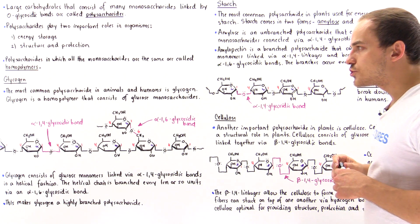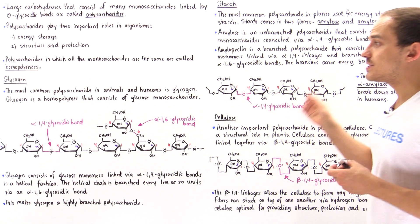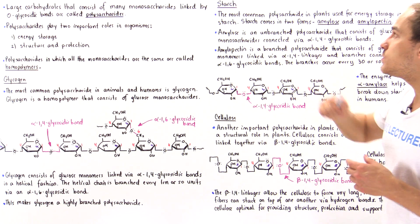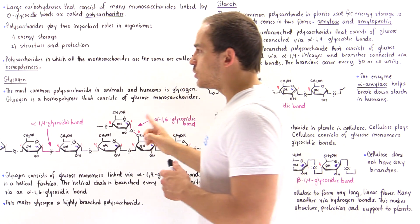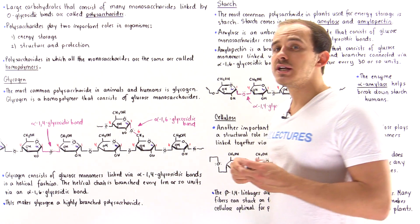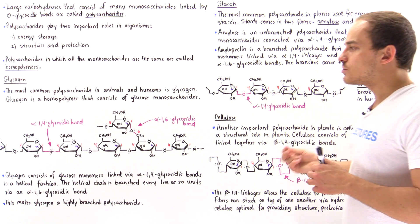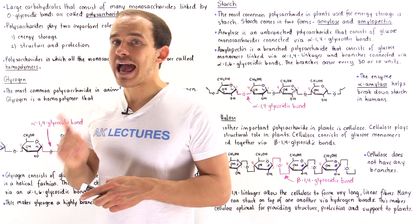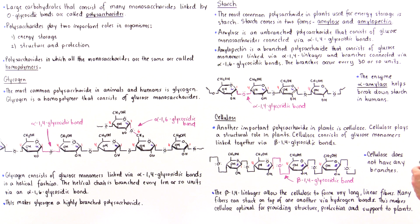Now let's move on to starch. If glycogen is the energy storage in animals and humans, starch is the energy storage in plants. The most common polysaccharide in plants used for energy storage is starch. And unlike glycogen, which comes in one form, starch actually comes in two forms: amylose and amylopectin. Amylose essentially consists of only one type of bond — the alpha-1,4 glycosidic bond — making it an unbranched polysaccharide of glucose monosaccharides.